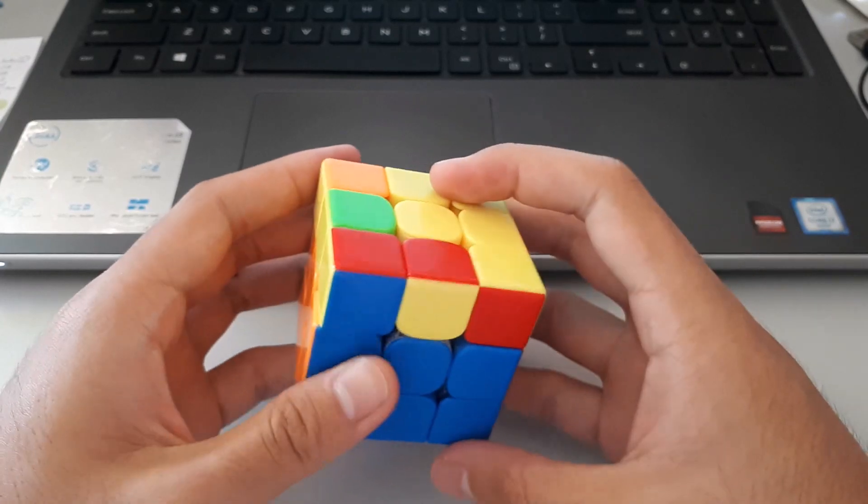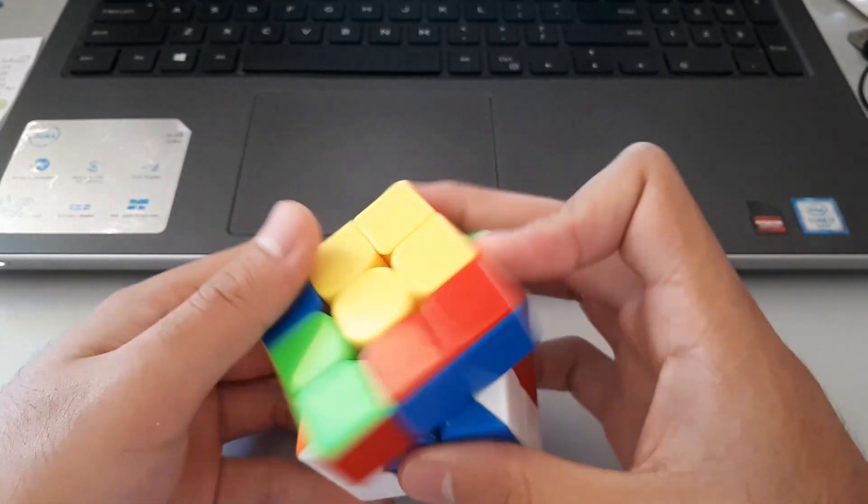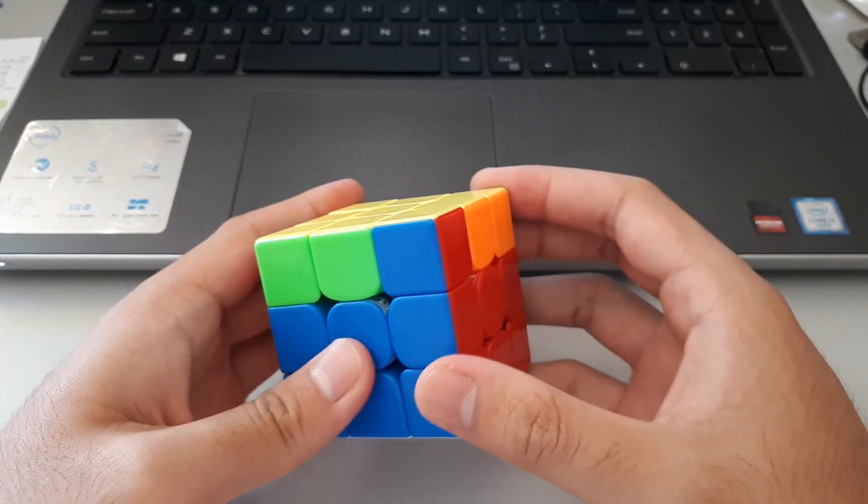So this is the F inverse XE one, and Y perm.